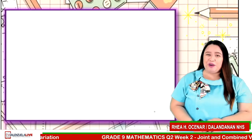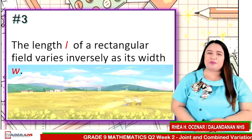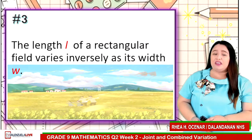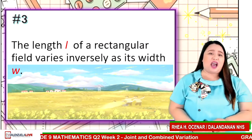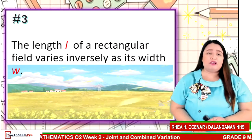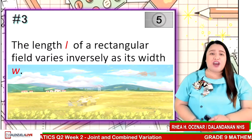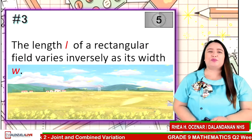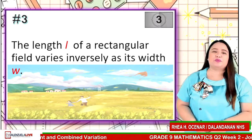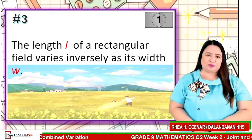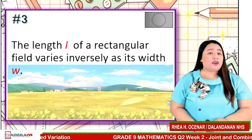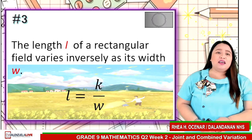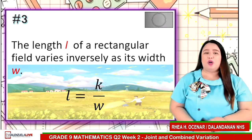Statement number 3. The length L of a rectangular field varies inversely as its width W. 5 seconds to answer. The correct answer is L is equal to k over W.